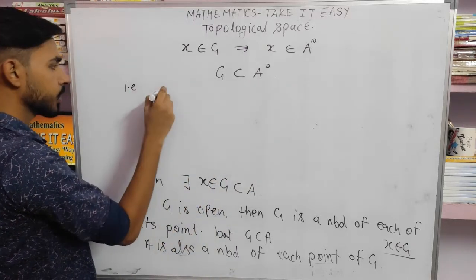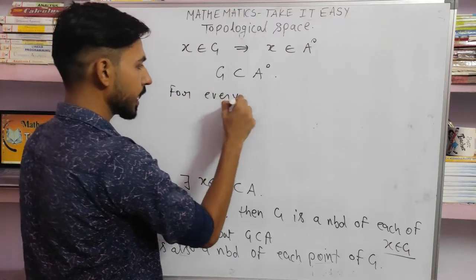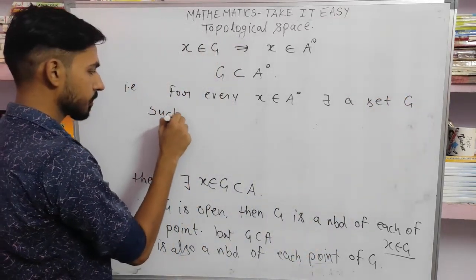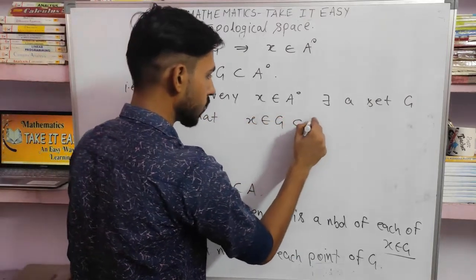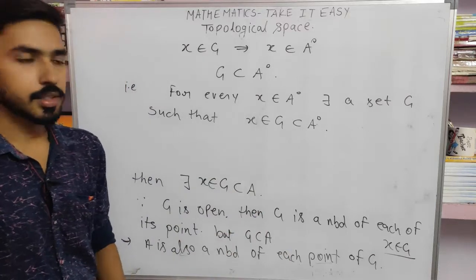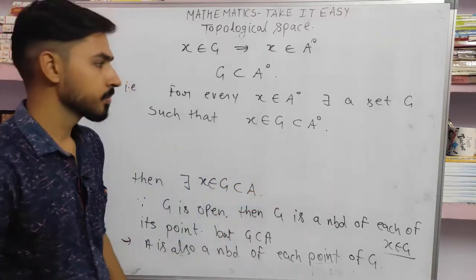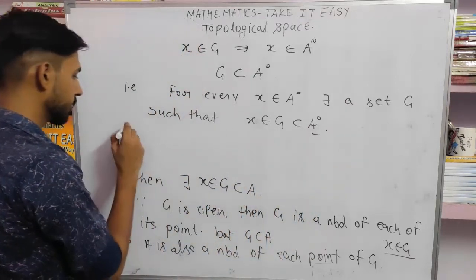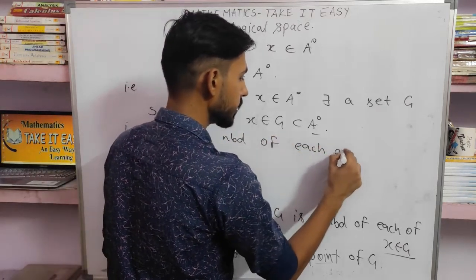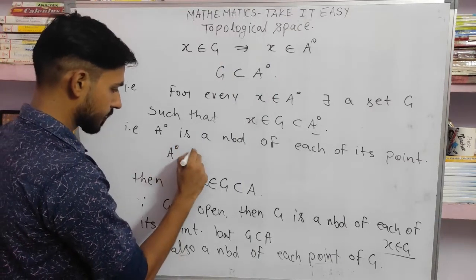So for every x belonging to A interior, there exists a set G such that x belongs to G and G is a subset of A interior. Therefore A interior is a neighborhood of x — that is, A interior is a neighborhood of each of its points. So we can say that A interior is open, as it is the neighborhood of each of its points. This proves our first condition.